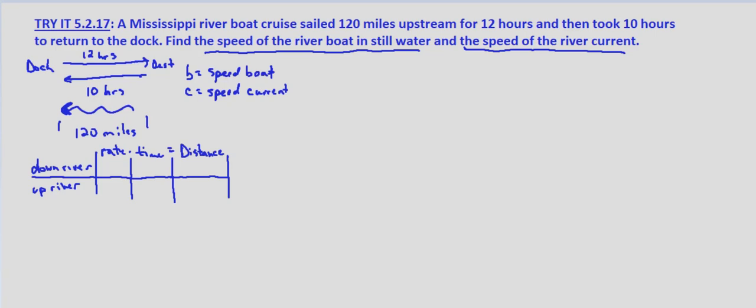We're asked to find the speed of the riverboat in still water and the speed of the river current. So I went ahead and drew this little diagram where we have a dock. The boat traveled 12 hours upstream, so against the current to some destination and then traveled 10 hours back. Here's the direction of the current just for clarification.